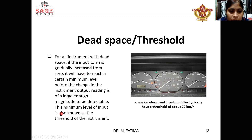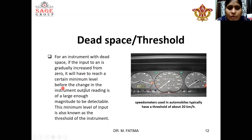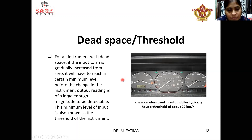The minimum level of input is known as the threshold of the instrument. For an instrument with dead space, if the input is given gradually from zero, it will reach a certain minimum level before the change in the instrument output reading is of large enough magnitude to be detectable. This is called threshold. All instruments have some threshold — if the input crosses the threshold, the instrument starts showing some output. This completes dead space and threshold.